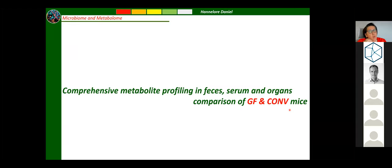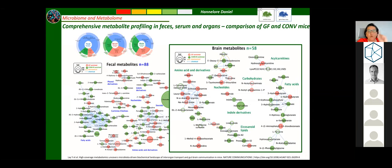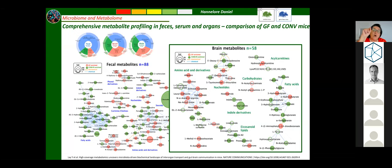A recent paper conducted fantastic comprehensive metabolic phenotyping of germ-free and conventional mice using high-end machinery. It showed wonderful fecal metabolites and serum metabolites differing between the two animal models. What was also impressive was what happened in the brain — 58 metabolites were different between the two models. Yet none of the neurotransmitters — neither serotonin, dopamine, nor anything else — showed significant differences, despite the group having a fantastic toolkit to assess all neurotransmitters and their degradation products.